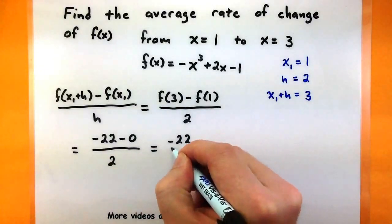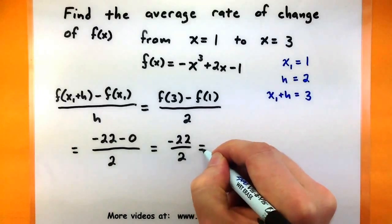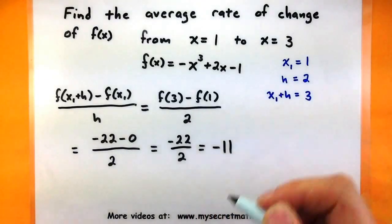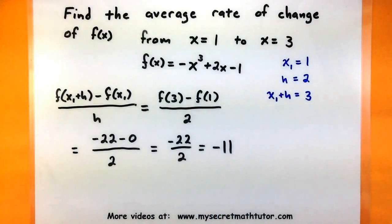So, -22 over 2, or -11. Basically, the average rate of change for this particular function between 1 and 3 is -11.